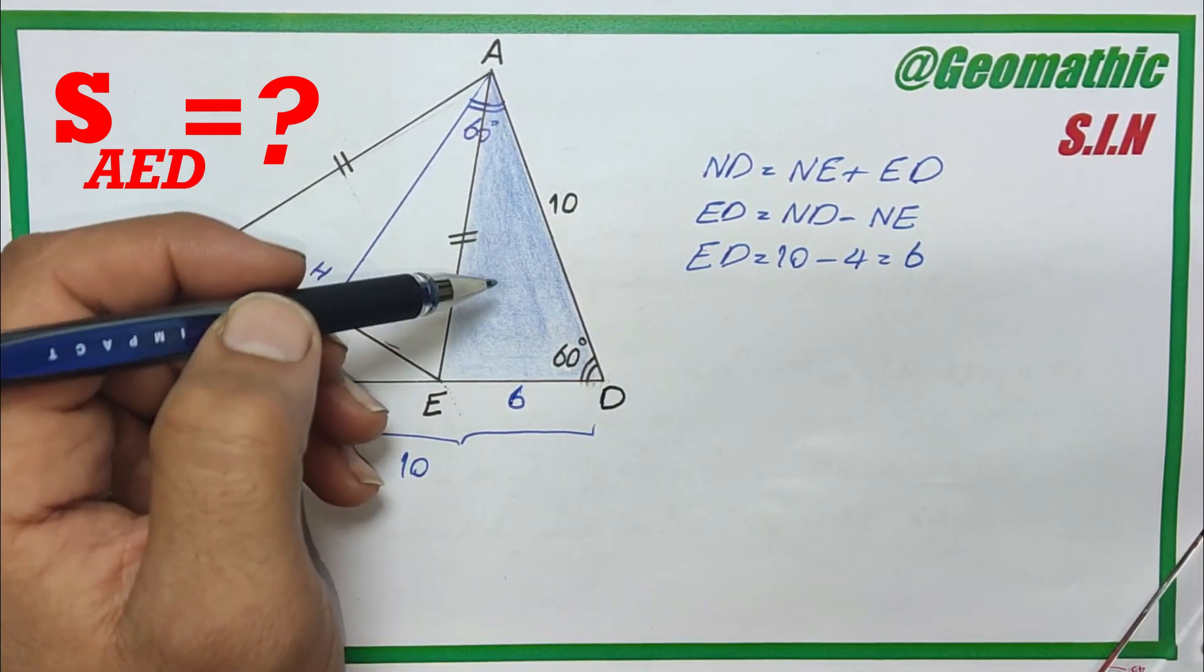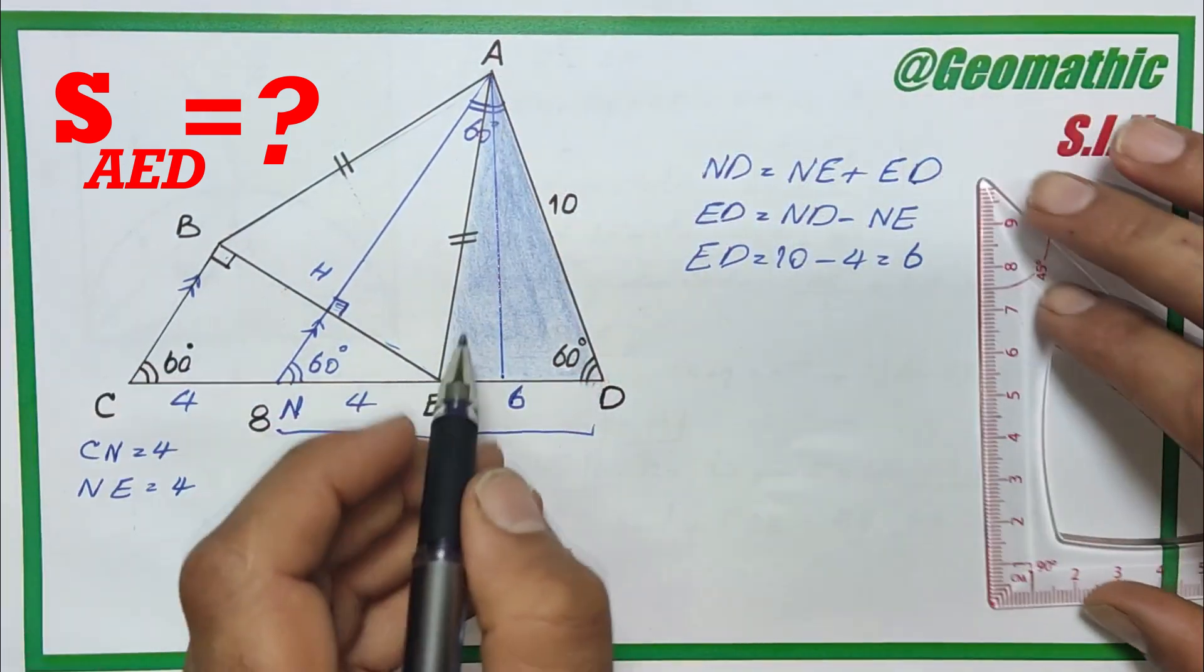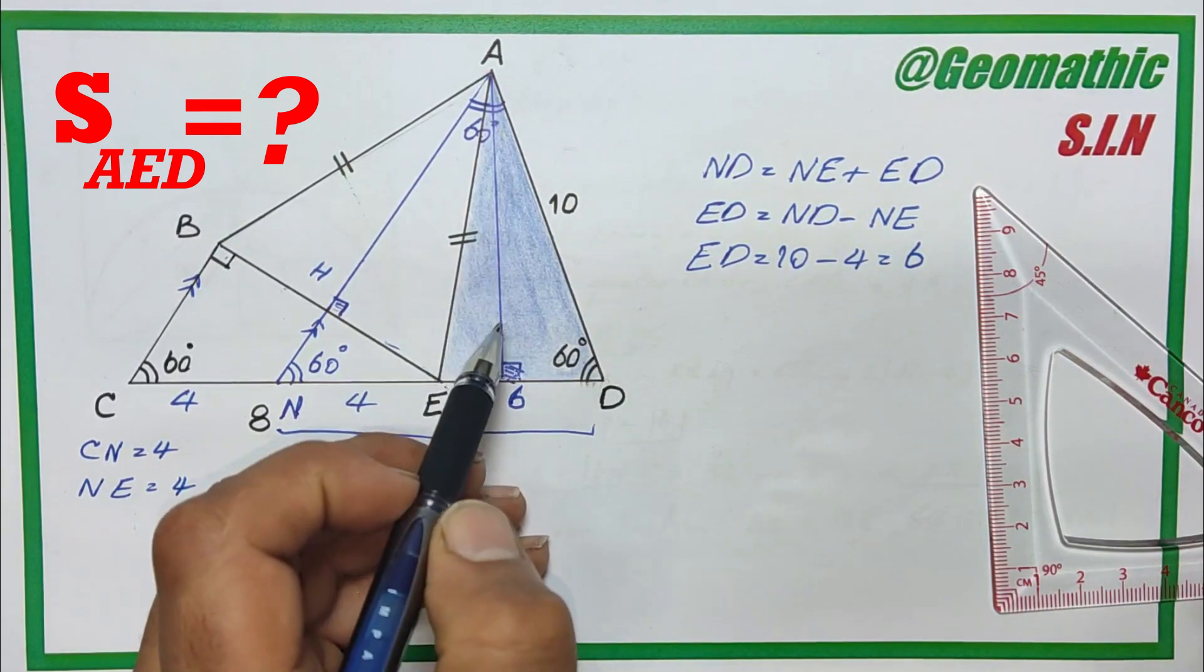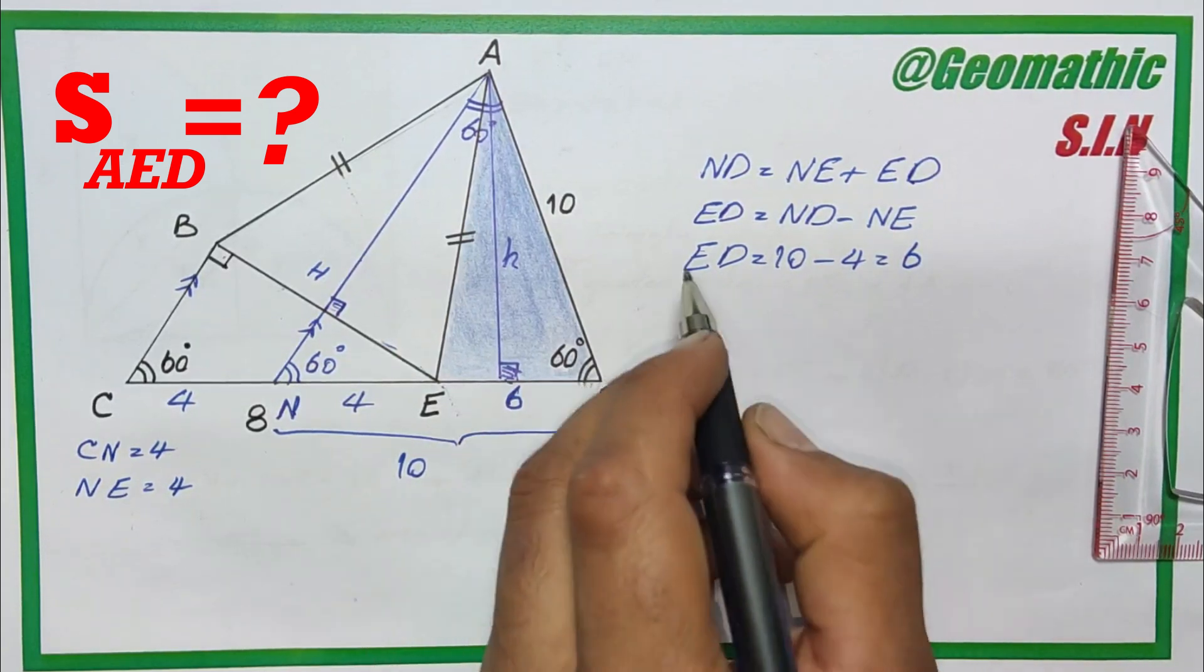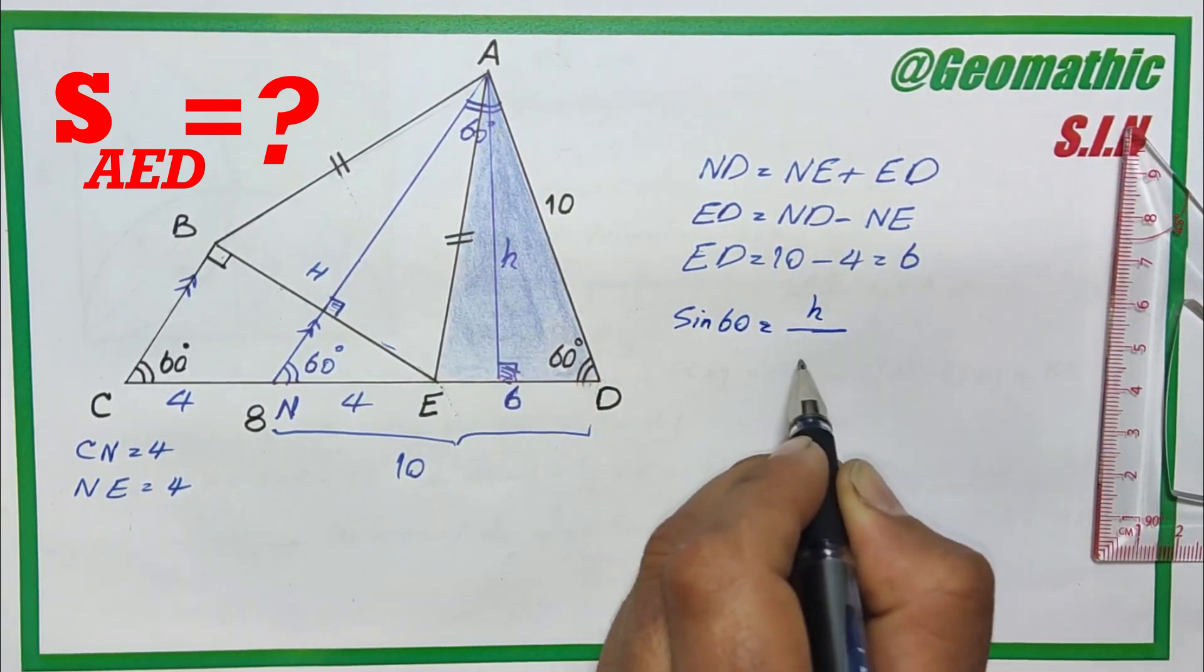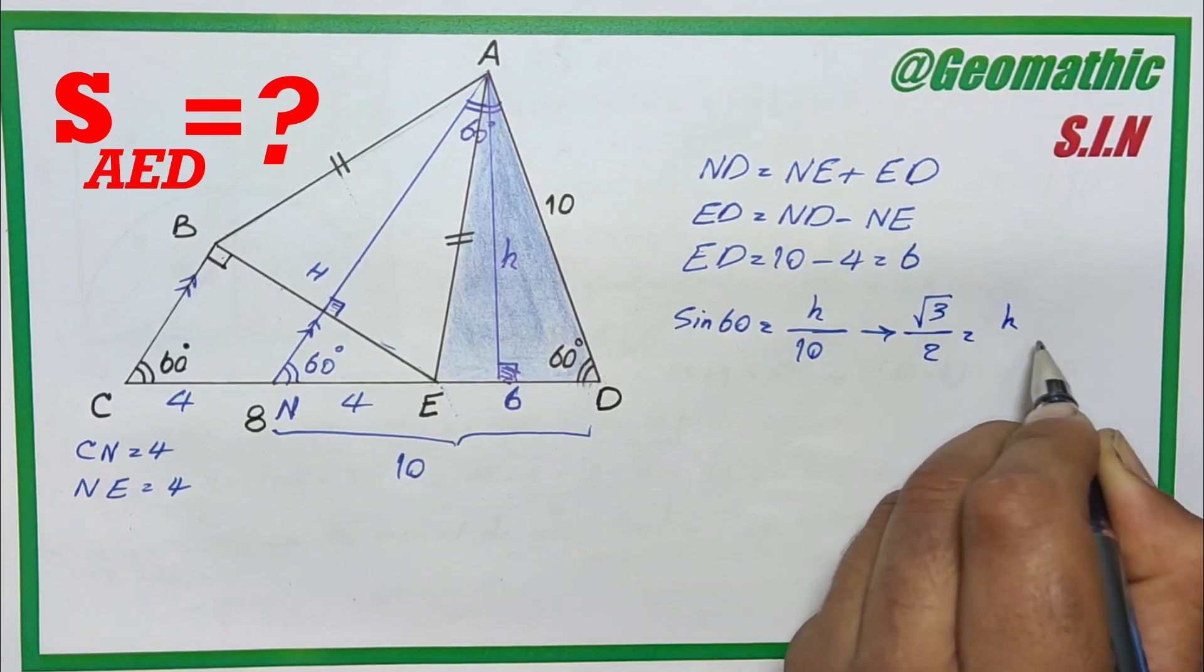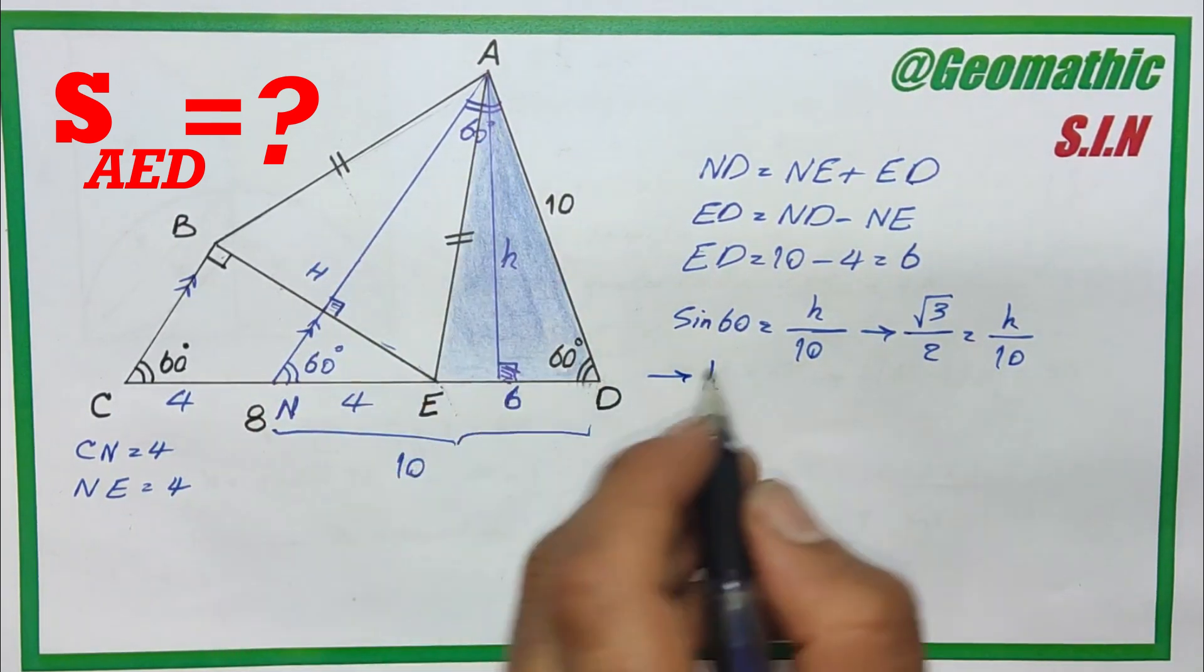Now we have all needed information to solve the question. If we drop an altitude onto ED like this, we know the altitude makes a right angle. In a right triangle, sine equals opposite over hypotenuse, so we should find the altitude, and I name it h. Now I can write the final section of solution. Sine 60 equals h over hypotenuse 10. Then we have sine 60 equals square root 3 over 2 equals h over 10. So h as altitude of this triangle equals 5 times the square root of 3.